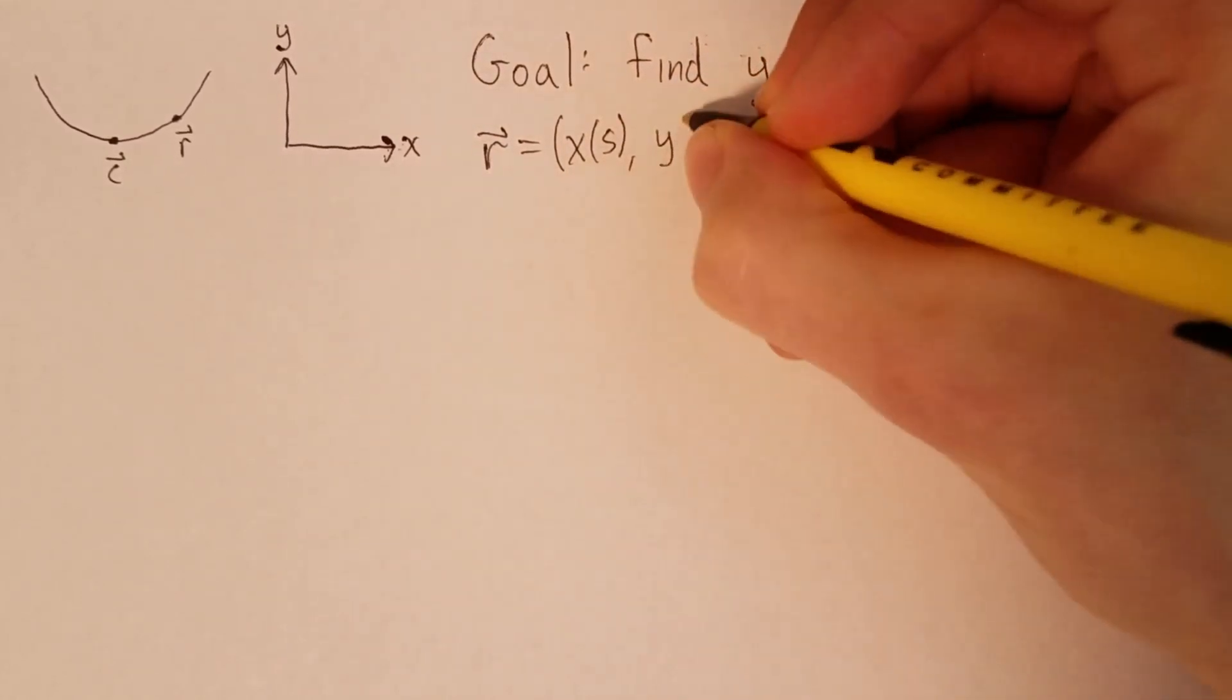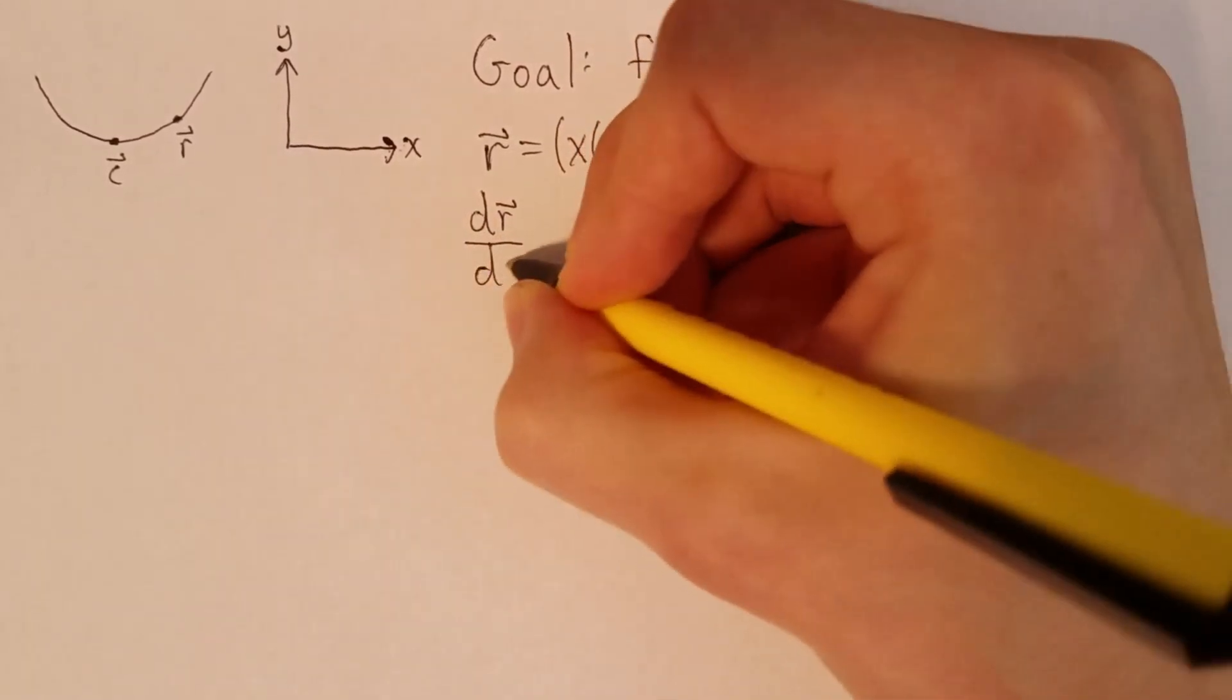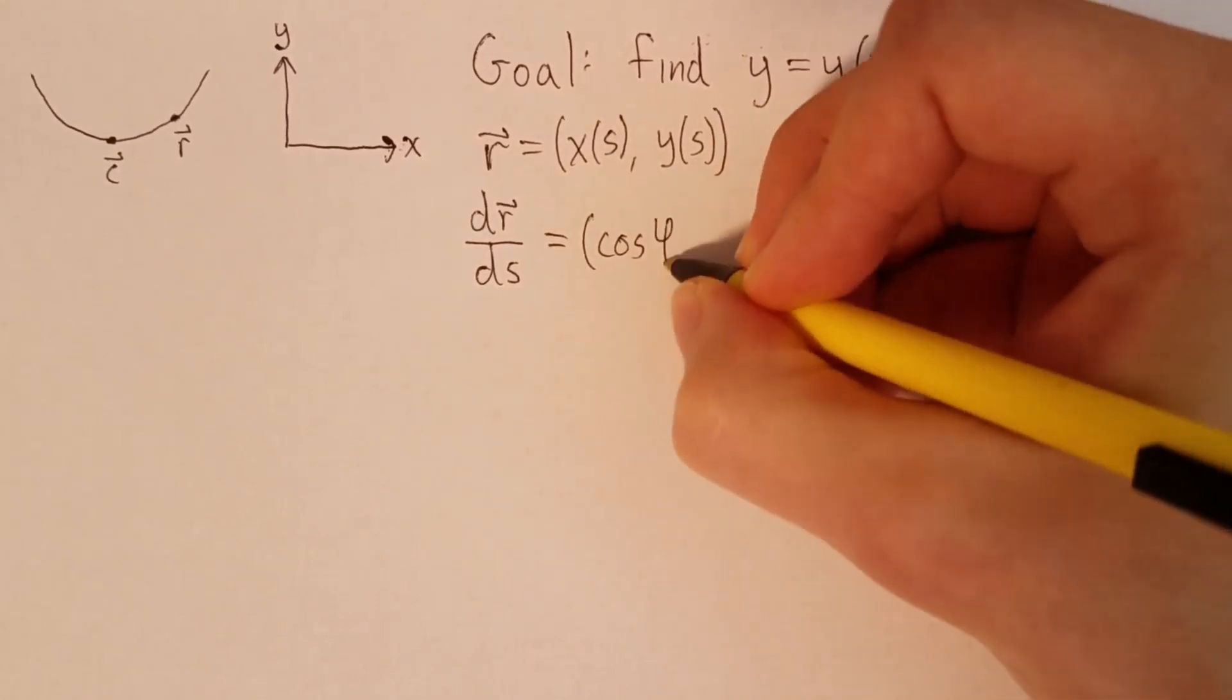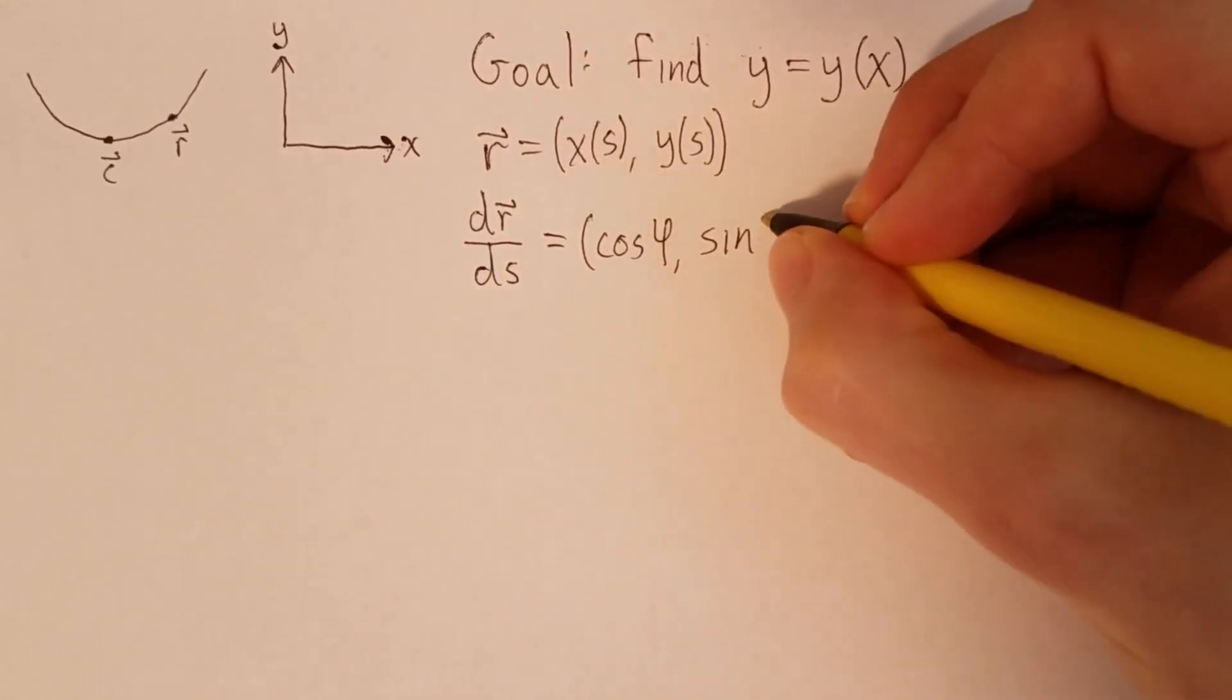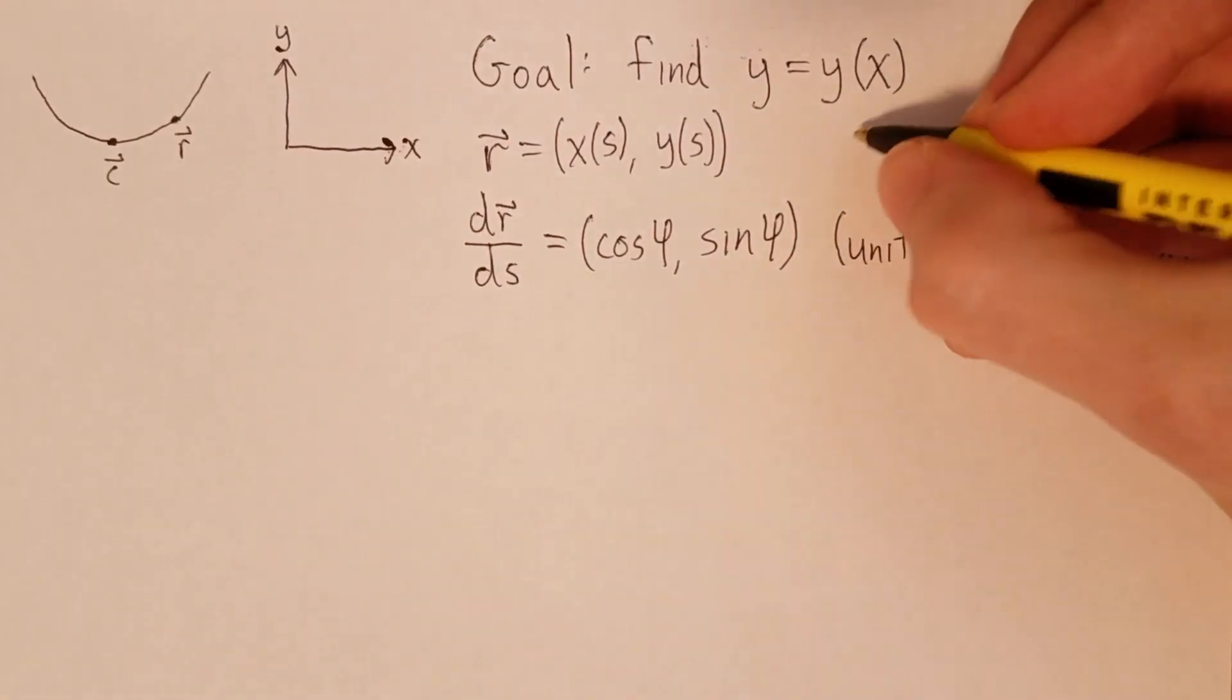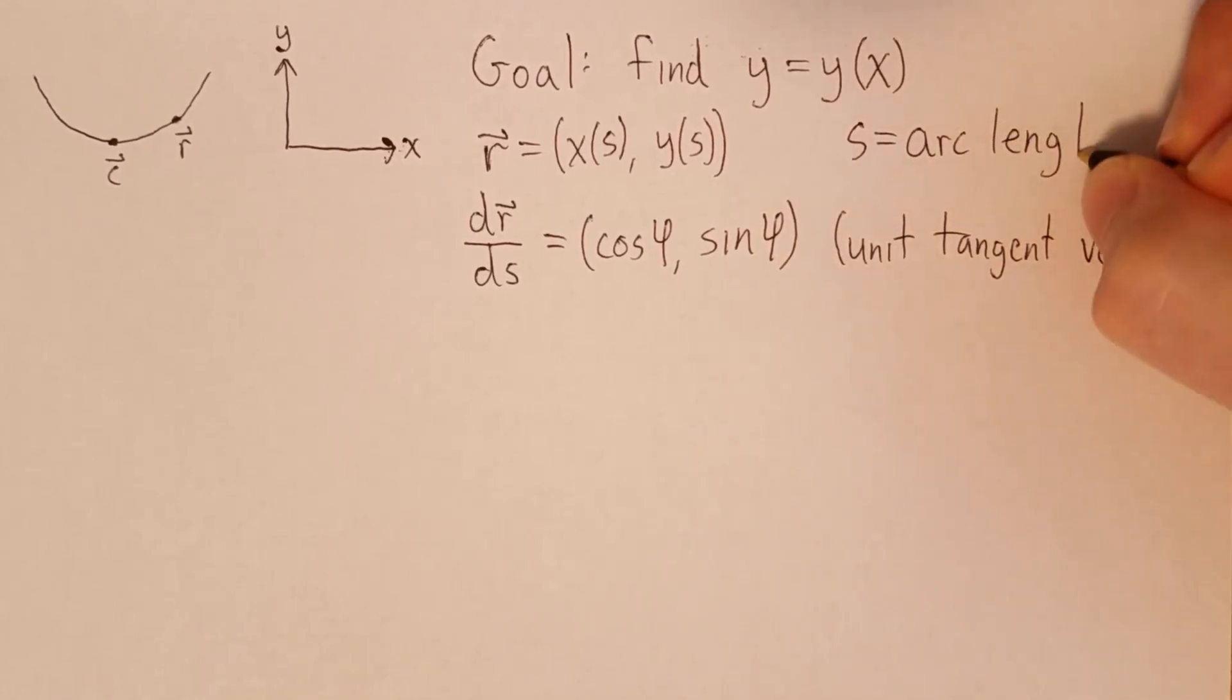And we want to do this in such a way that the velocity vector dr/ds is of unit length, so that we can write it as cosine of φ, sine of φ for some angle φ. And it's actually always possible to find such a parametrization, and this works if we let s be the arc length of the curve. Then we get the unit tangent vector like we want.